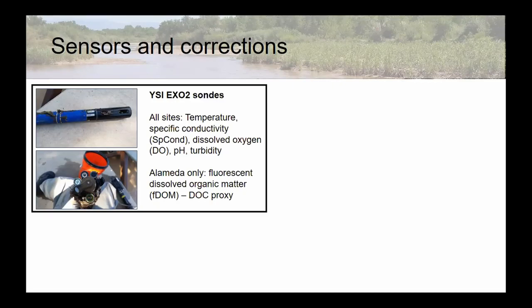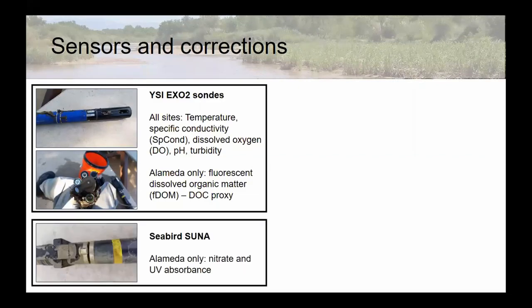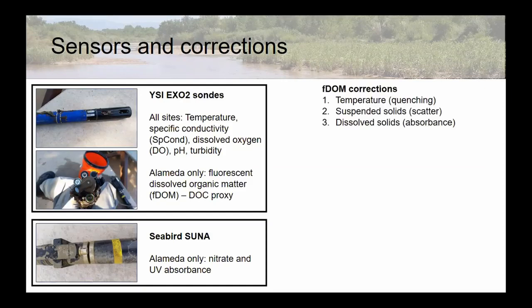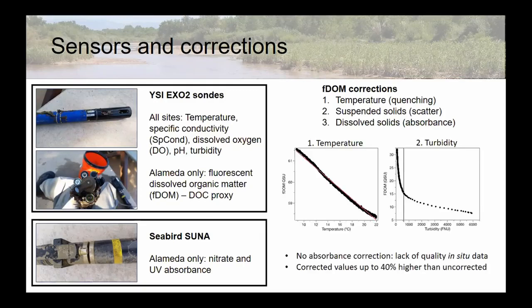I'm a carbon biogeochemist by trade, so my focus is the fluorescent dissolved organic matter probe, or FDOM — it's a mouthful, but it basically is a proxy for DOC. We also employed a Seabird SUNA, an optical nitrate sensor that measures nitrate and UV absorbance at a bunch of different wavelengths. For FDOM, it's an optical measurement, so fluorescence is affected by temperature quenching, suspended solids through scattering, and dissolved solids through absorbance. We corrected for temperature and turbidity — turbidity is obviously a huge issue in our system. We didn't do an absorbance correction since the SUNA really hates turbidity. The corrected values are 40% higher than the uncorrected data, so it's really important to make sure we correct for these measurements.